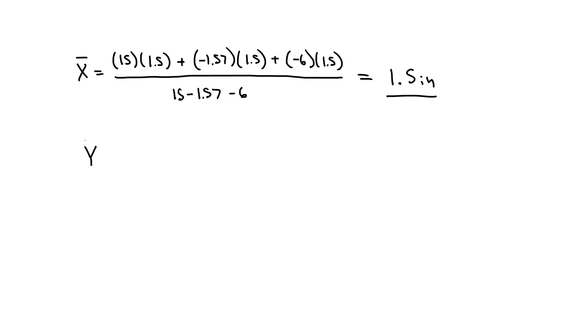I can do a similar thing for y bar. So y bar is going to be equal to area 1 times y bar 1, so 15 times 2.5, plus area 2, negative 1.57, times y bar 2, which is 3.42 inches, plus area 3, negative 6, times y bar 3 of 1.5. Again divide this by the overall area, so 15 minus 1.57 minus 6. So all of this is going to give me a final number of 3.11 inches.